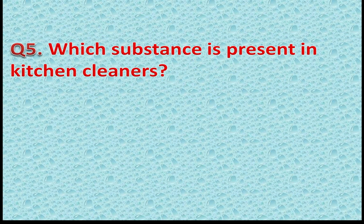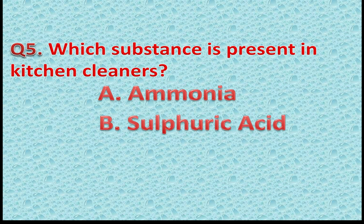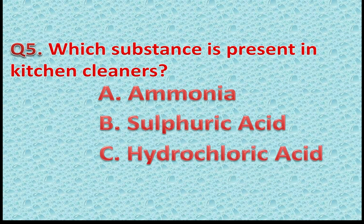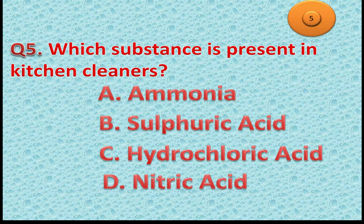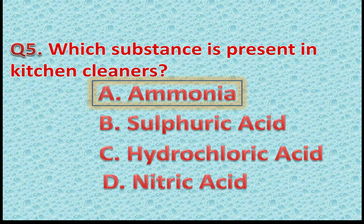Question 5: Which substance is present in kitchen cleaners? Option A: Ammonia. Option B: Sulfuric acid. Option C: Hydrochloric acid. Option D: Nitric acid. The correct answer is Option A — Ammonia, because it is a base. If you gave this answer, you got one more point.